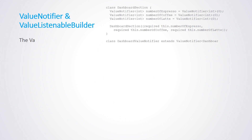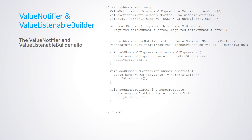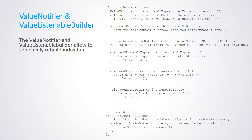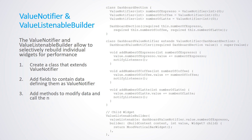The ValueNotifier and ValueListenableBuilder allow selectively rebuilding individual widgets for performance. First, create a class that extends ValueNotifier. Second, add fields to contain data, defining them as ValueNotifier. Third, add methods to modify data and call the notifyListeners method.